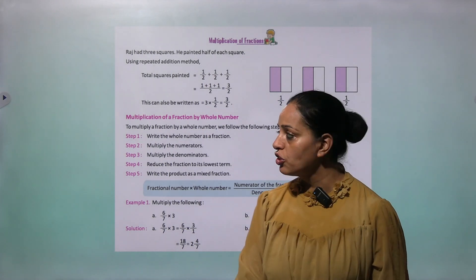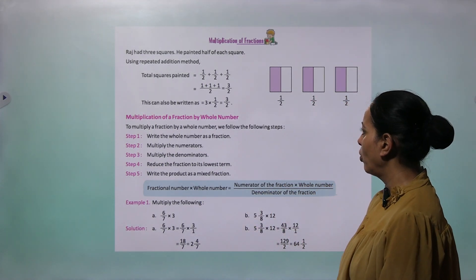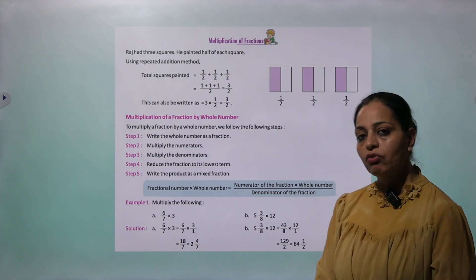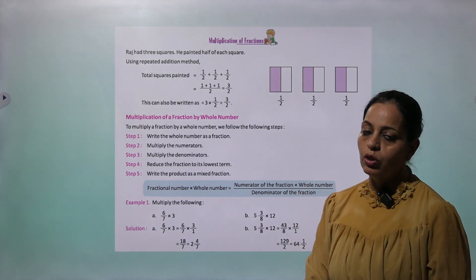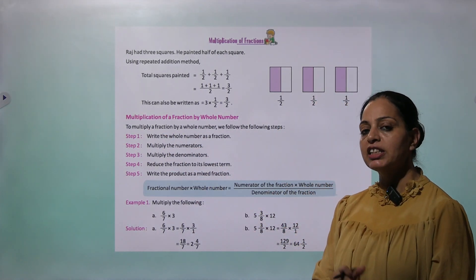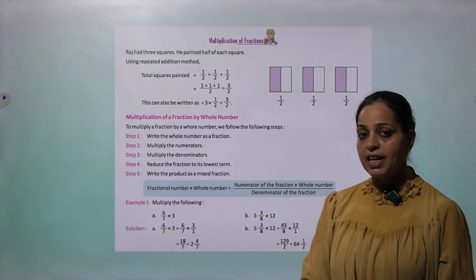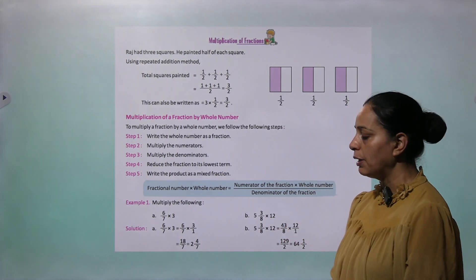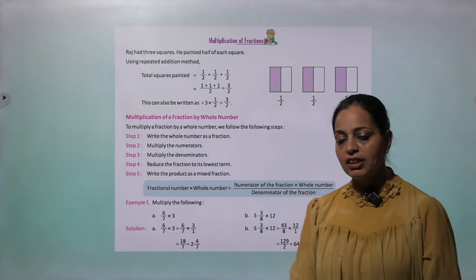Now we are talking about multiplication of fractions. Raj had 3 squares and painted half of each square. Using repeated addition: half plus half plus half equals 3 by 2. This can also be written as 3 times half, so multiplication means repeated addition. To multiply a fraction by a whole number: Step 1 — write the whole number as a fraction. Step 2 — multiply the numerators. Step 3 — multiply the denominators. Step 4 — reduce to lowest term. Step 5 — write the product as a mixed fraction.